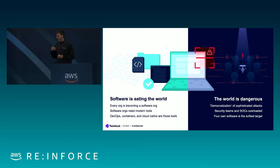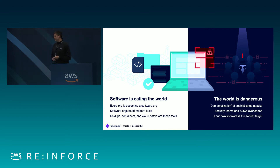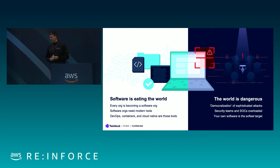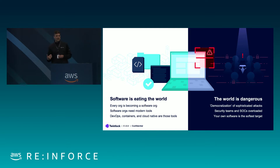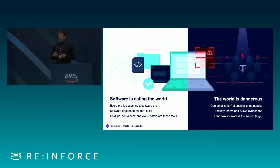Modern software is being deployed more quickly than ever before for a lot of different reasons: to provide competitive advantages, to deliver end-user business value, and ultimately it's being leveraged by developers because it makes them happier and more efficient. Developers and DevOps teams want to use a modern toolkit to build and release software. That's why we see the rise of things like Docker, Kubernetes, AWS Lambda, and AWS Fargate, with most organizations today using a combination of all of these different compute options.